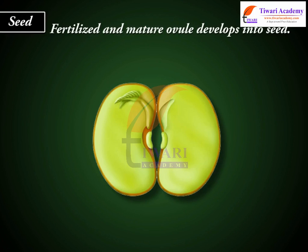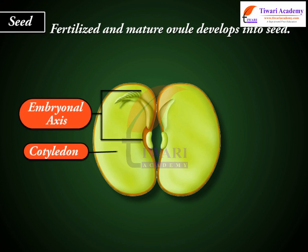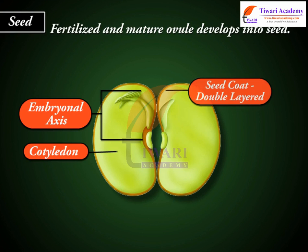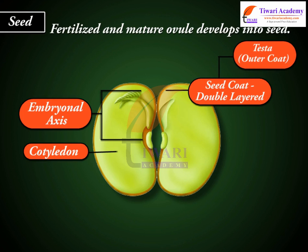The fertilized and mature ovule develops into a seed. The seed consists of cotyledon and embryonal axis. The seed coat is double-layered, formed by integuments — the testa (outer coat) and the tegmen (inner coat).